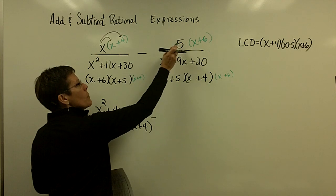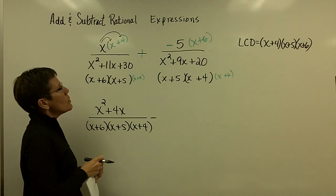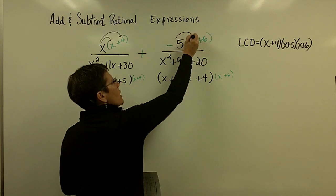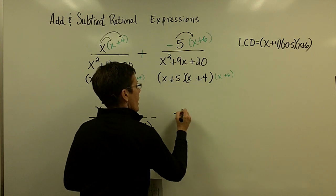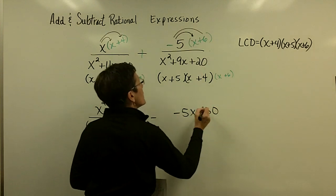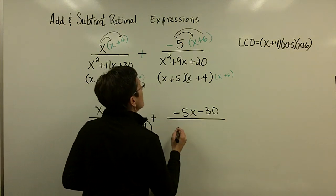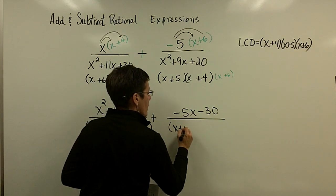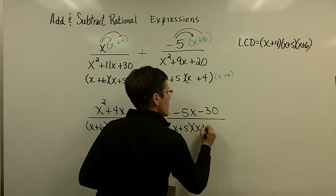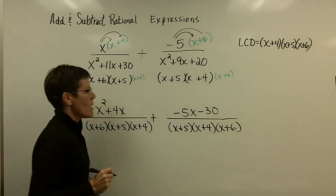If, when this is a monomial, it's easier to go like that and distribute a negative 5 times x and get a minus 5x and a negative 5 times 6 and get a minus 30. But, I just have to remind myself that I changed that into an addition problem now. And, the denominator is the x+5 that it already had, the x+4 it already had, and I just put the x+6 into the denominator.